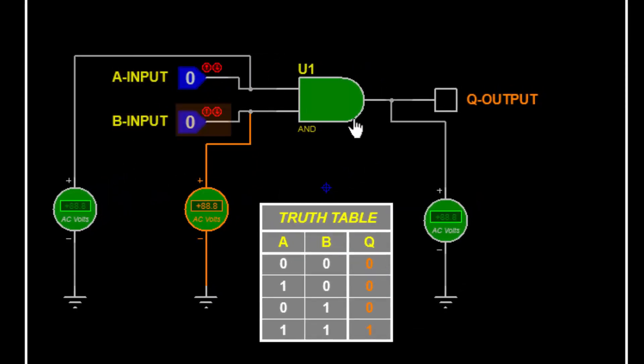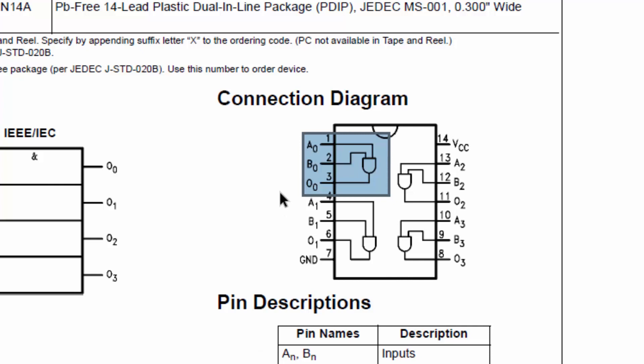So it has two inputs: A input and B input. And we have Q output, as it is mentioned here: A, B, out. A, B are Q. Sometimes it is mentioned O, sometimes it is written Q. Q is output, O is output. A and B are input.